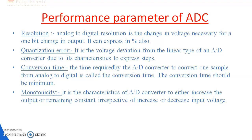Let us discuss each parameter. Resolution: analog-to-digital resolution is the change in voltage necessary for a 1-bit change in output, and it can be expressed as a percentage. Quantization error: it is the voltage deviation from the linear response of an ADC due to its inability to express exact steps. Conversion time: the time required by the ADC to convert a sample from analog to digital, and it should be minimum. Monotonicity: if the characteristics of the ADC cause the output to either increase or remain constant with increasing input voltage.